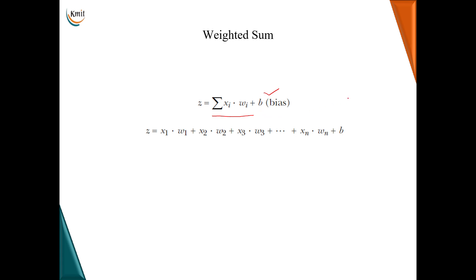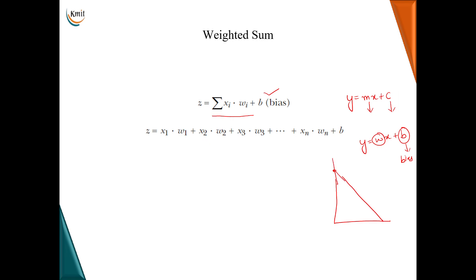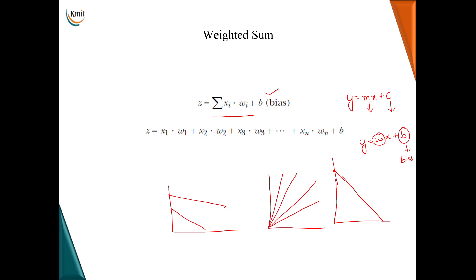Bias will decide the slope as well as the intercept. The equation of a straight line is y = mx + c, where m is the slope and c is the intercept. The same applies to our neural network: y = wx + b, where w is the weight acting as the slope and b is the bias acting as the intercept. The importance of bias is that it controls where the line touches the y-axis. Without bias, all straight lines start from the origin and you can only control the slope. With bias, you can control both the intercept and the slope. So the weighted sum is: z = Σ(wᵢxᵢ) + b, which expands to x1·w1 + x2·w2 + ... + bias.